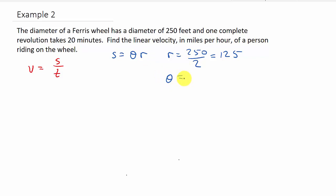So it says it takes 20 minutes to complete one revolution. So one revolution, okay, that's 360 degrees, but since we need ours in radians, that would be 2 pi. So that's our angle. For one revolution, it's 2 pi.